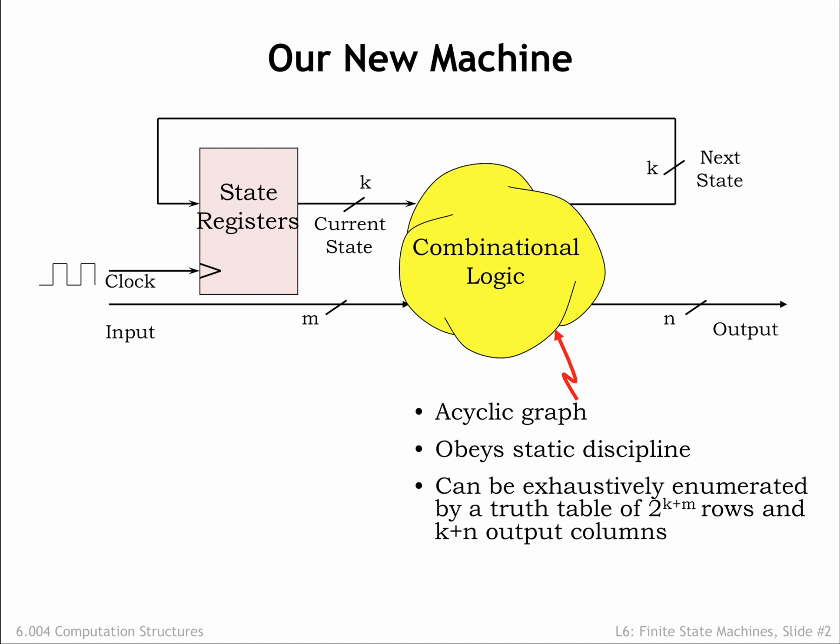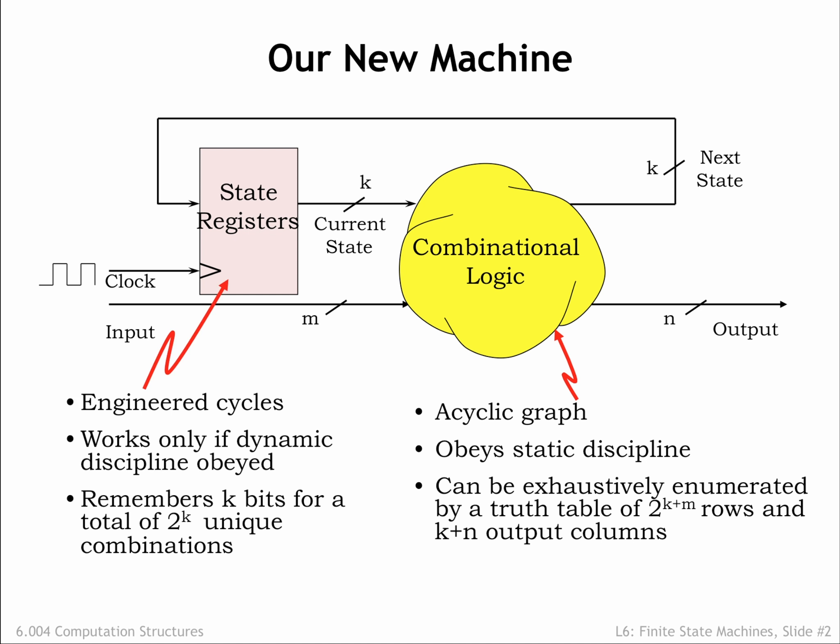There is also a functional specification that tells us the output values for every possible combination of input values. In this diagram there are k plus m inputs and k plus n outputs, so the truth table for the combinational logic will have 2 to the k plus m rows and k plus n output columns. The job of the state registers is to remember the current state of the sequential logic. The state is encoded as some number k of bits, which will allow us to represent 2 to the k unique states.